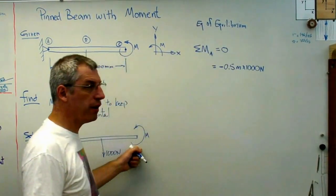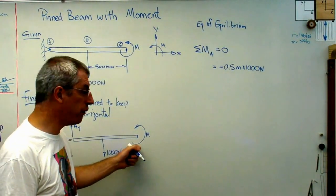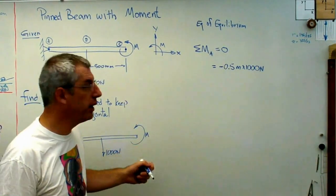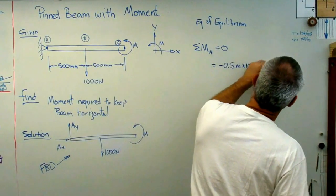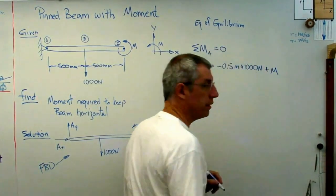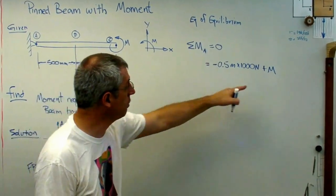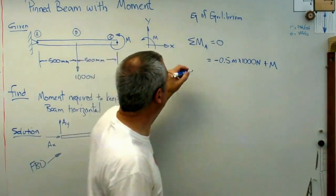Now, right here, what do I do about that? Well, that's just a moment. It's not a force times the distance. It's just a moment. So I get to add that in here just like this. It's constant about the beam along the beam, so I can just add that in. And that has to be zero.